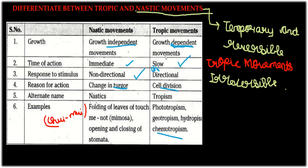Tropic movement is growth-dependent, slow, and unidirectional, and it is due to cell division. Tropism is also known by several types: phototropism, geotropism, hydrotropism (hydro means water), and chemotropism (chemo means chemicals).